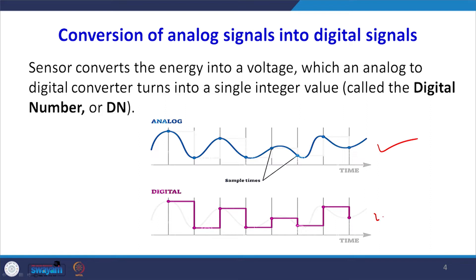The analog signal is a kind of continuous curve, and the digital signal becomes a harmonized kind of signal. These signals convert energy into a voltage system, and the analog-to-digital converter turns them into single integer values. At the end, the analog signals are converted into digital signals, giving us values in the form of bits and bytes — 0s and 1s. The combination of bit and byte gives us the digital number at that particular object location.